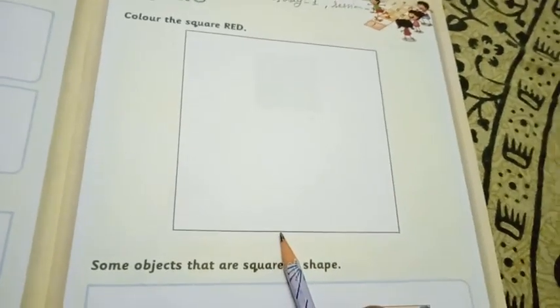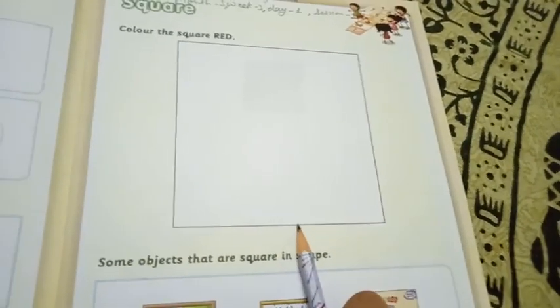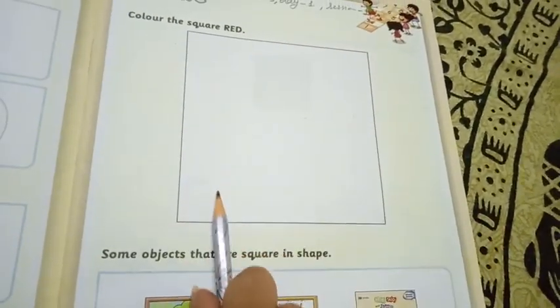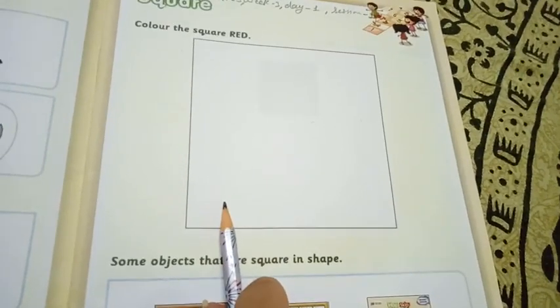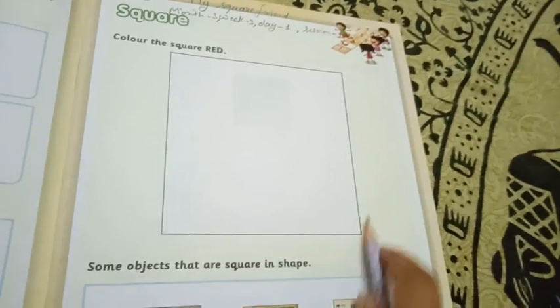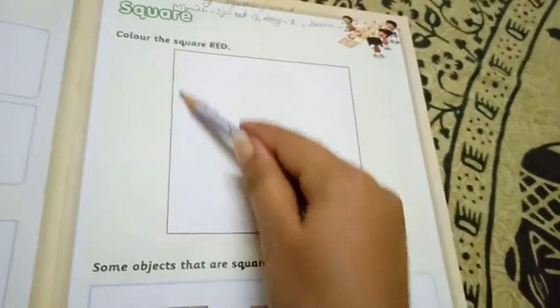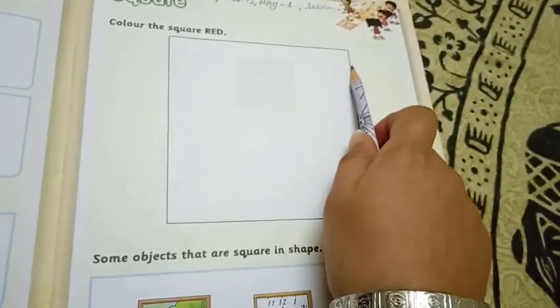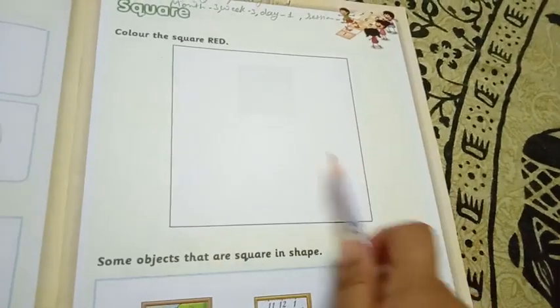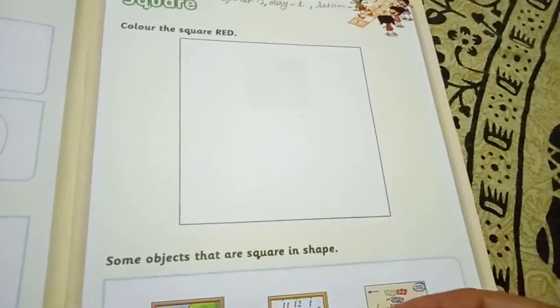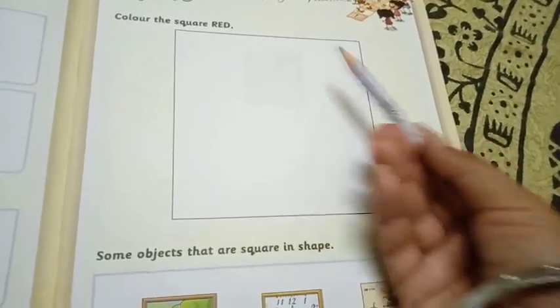So one more thing. Do you know children? All the sides of the square are of the same length. So all the sides are equals. This side is equal to this side. This side equals to this side, this side and this side. If you can see in this side, you will see same side.